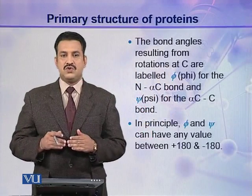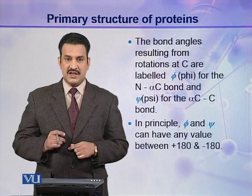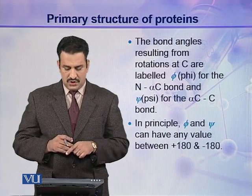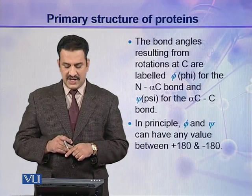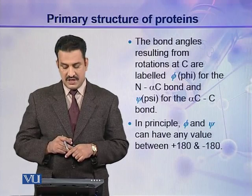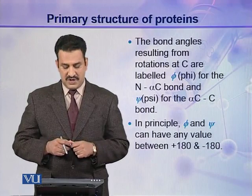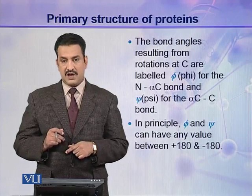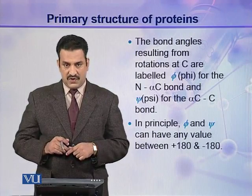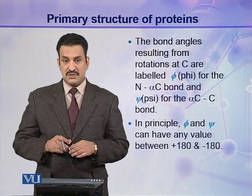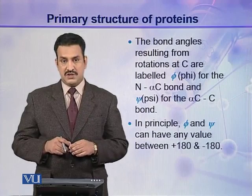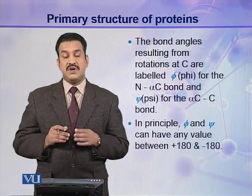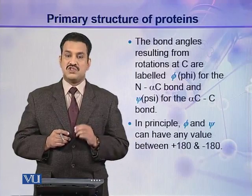The rotations are allowed at the alpha C–C bond and at the N–alpha C bond. The bond angles resulting from rotations at the alpha carbon are labeled phi if the rotation is between N and alpha carbon, and psi if the rotation is between alpha carbon and the C bond. In principle, phi and psi can have any value between plus 180 and minus 180 degrees. However, some values are still prohibited due to steric interference.